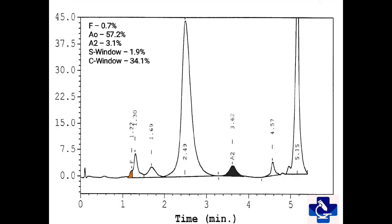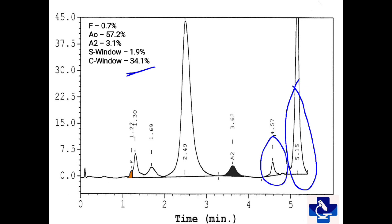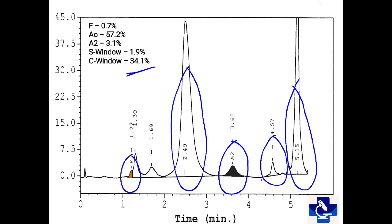In this HbC graph, we can see around 34% of hemoglobin falls in the C window. The S window has around 1.9%, A2 is normal at 3.1%, and we have an A0 of 57.2%. Fetal hemoglobin is normal. In the S window, we have the glycated fraction or post-translationally modified hemoglobin C. This graph is that of hemoglobin C heterozygous.